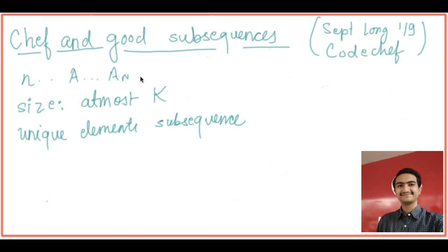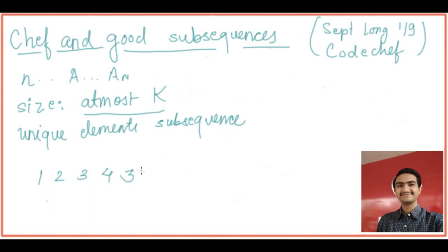We are given a sequence a1, a2, till a_n and another integer k. We have to find unique subsequences of length at most k such that no element is repeated in that subsequence. For example, if we are given the array 1 2 3 4 5 3 1 2 3 4 3 2, we have to find how many subsequences of length k we can make which have all unique elements.